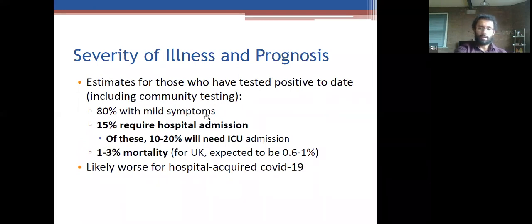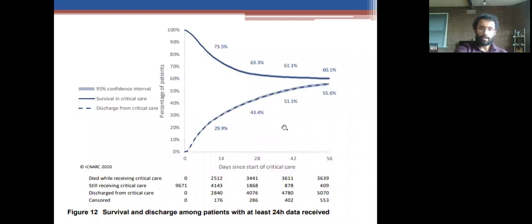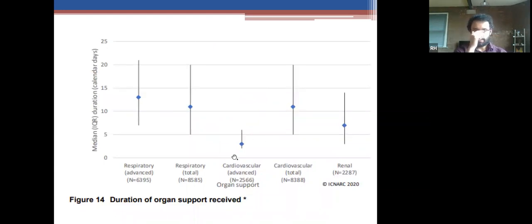Severity and prognosis: 80% of people have mild symptoms; around 15% require hospital admission. Of those admitted, 10-20% will need ICU admission. ICU mortality figures are quite high — of those admitted to intensive care in the UK with COVID since the pandemic started, ICU mortality is around 40%. Data from ICNARC audits shows the median duration on a ventilator is around two weeks.